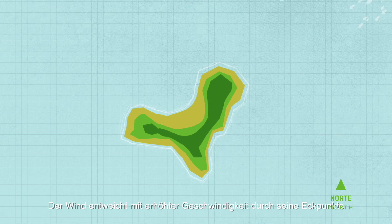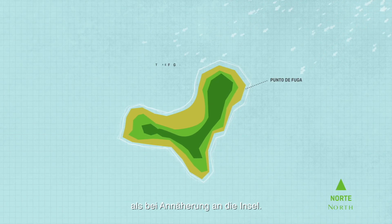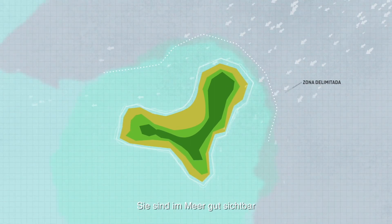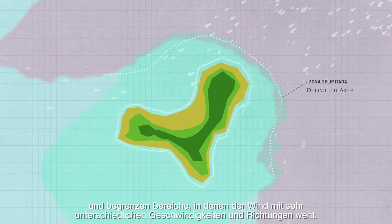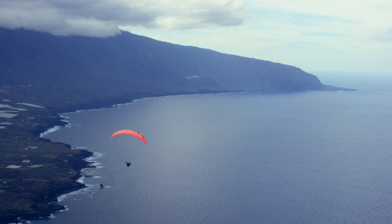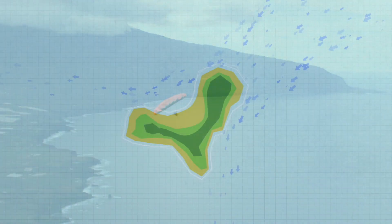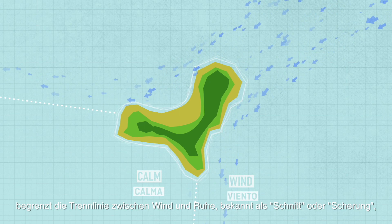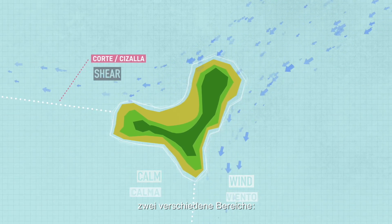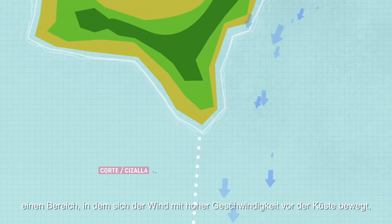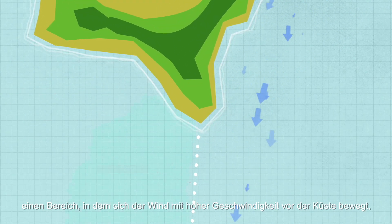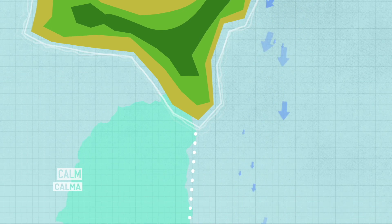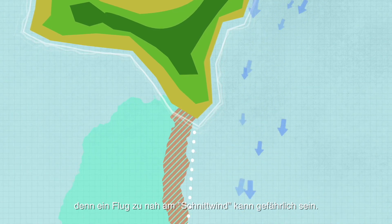The wind escapes through the vertices of the island at a higher speed than when it was approaching. We must be aware of these outflow points; they are easily visible on the sea, delimited by areas with wind blowing at different speeds and in different directions. The borderline between wind and calm, known as the wind cut or wind shear, separates two distinct areas: one where the wind moves at high speed offshore and another sheltered calm area. Flying too close to the wind cut can be very dangerous.